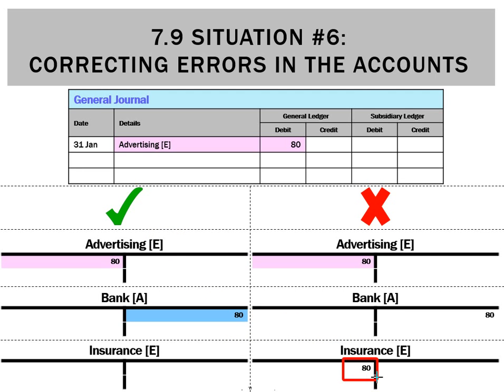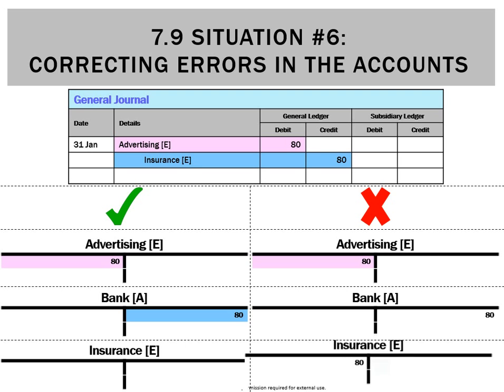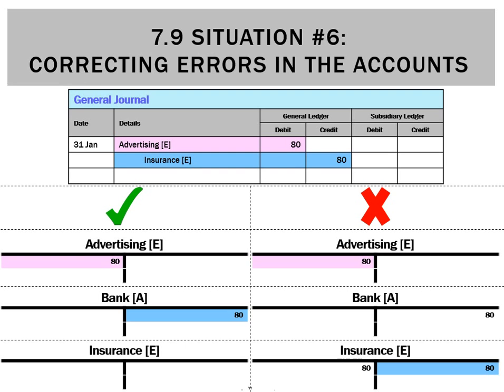To get it back to zero, we're going to do a credit into insurance, so those two accounts will offset each other. A narration is probably unlikely to be asked for this type of transaction, but most importantly we do put the memo number in. We can see our accounts on the right now look like the accounts on the left.